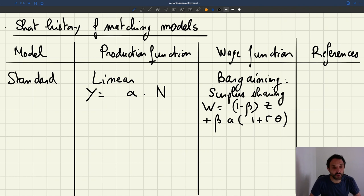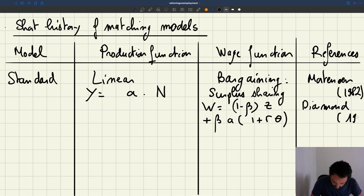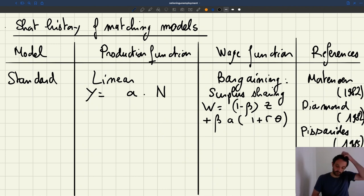And then the key people who contributed to that are Dale Mortensen, who had an important paper in 1982 on this; Peter Diamond, who also had a 1982 paper which was actually the first one to introduce surplus sharing; and then Chris Pissarides, who had an influential paper in 1985 that put everything together, all these different pieces. And of course, these three researchers got the Nobel Prize in 2010 for developing that matching model. So that was the standard model.